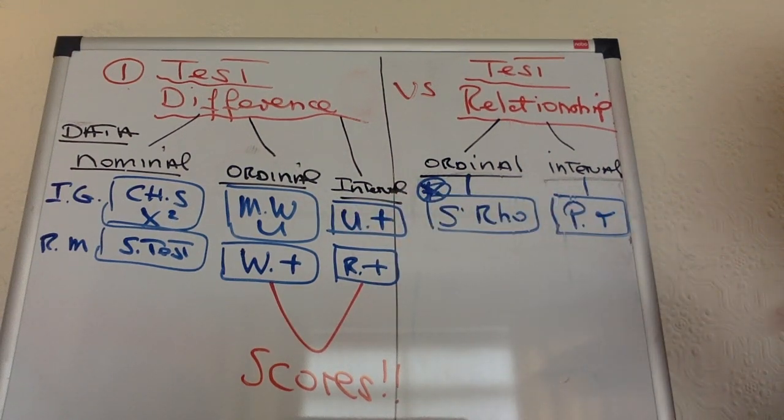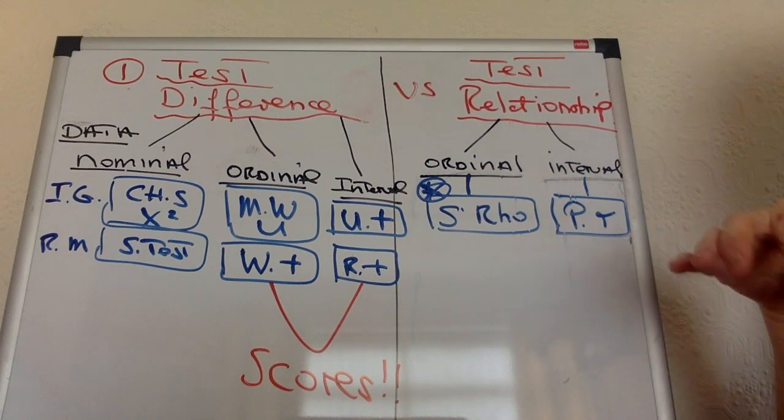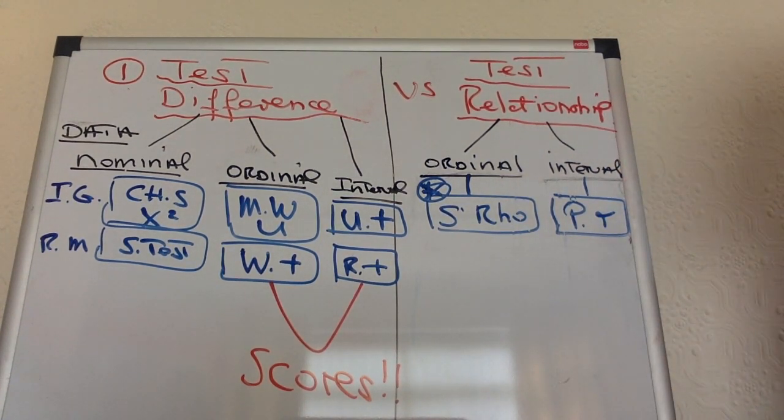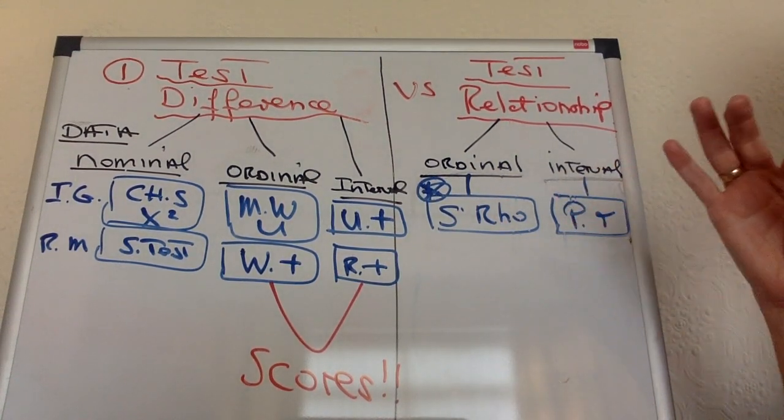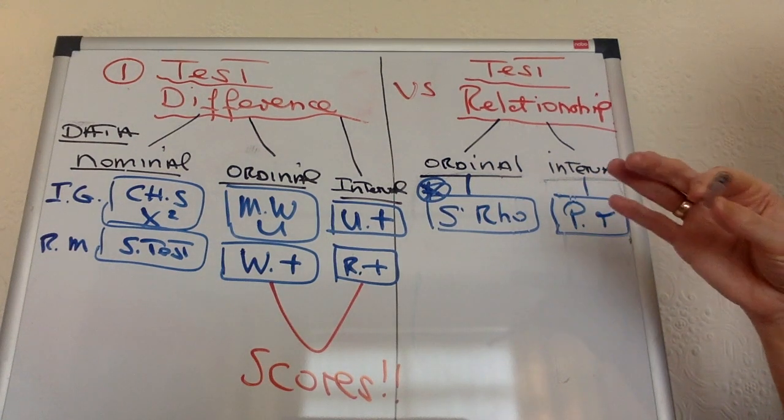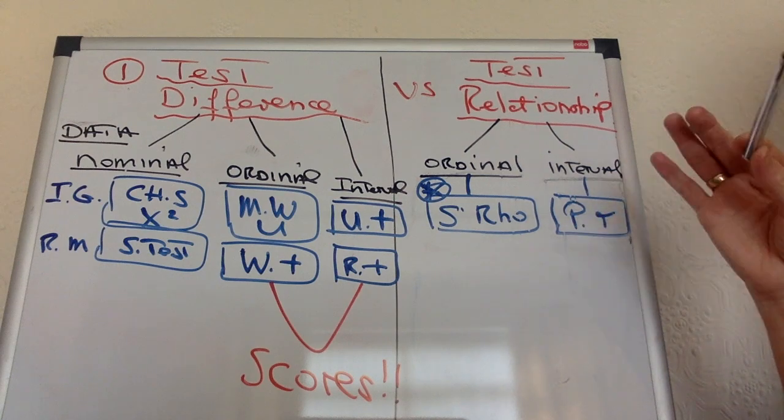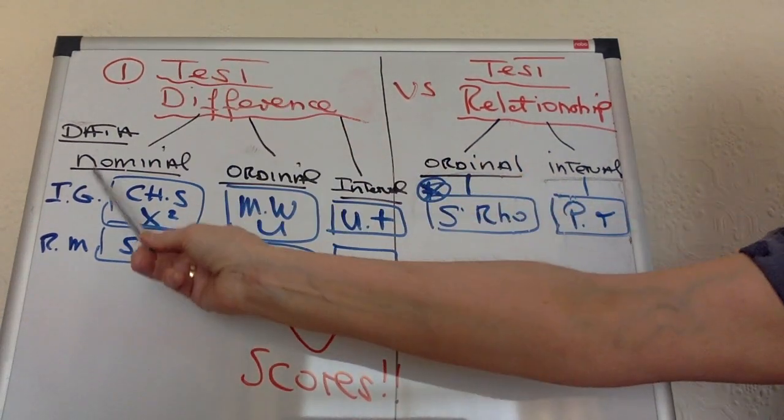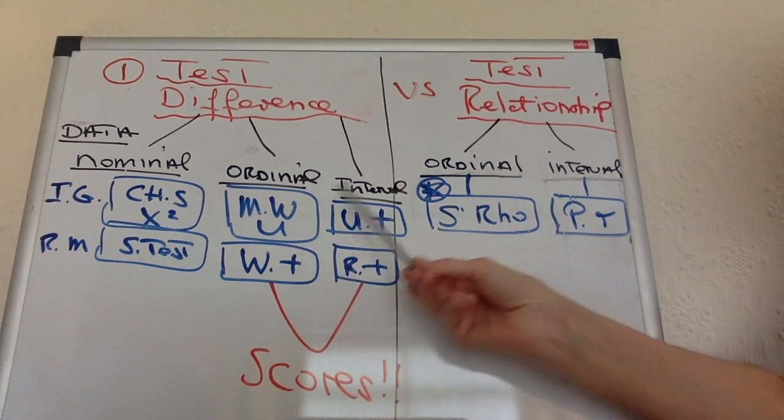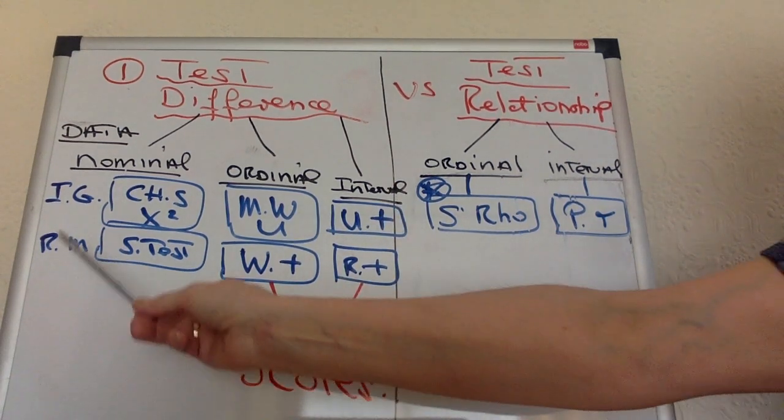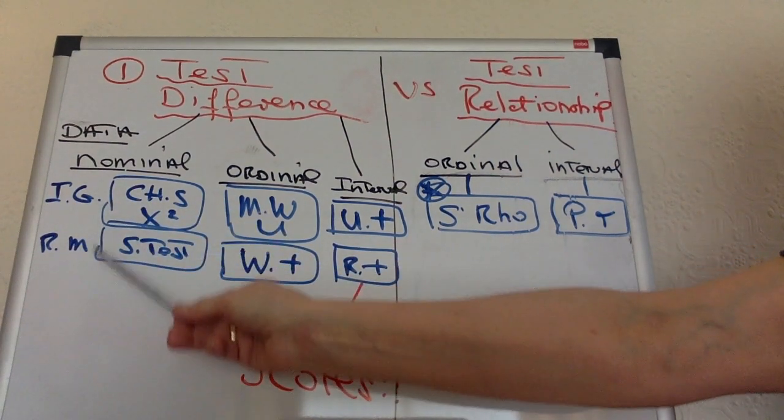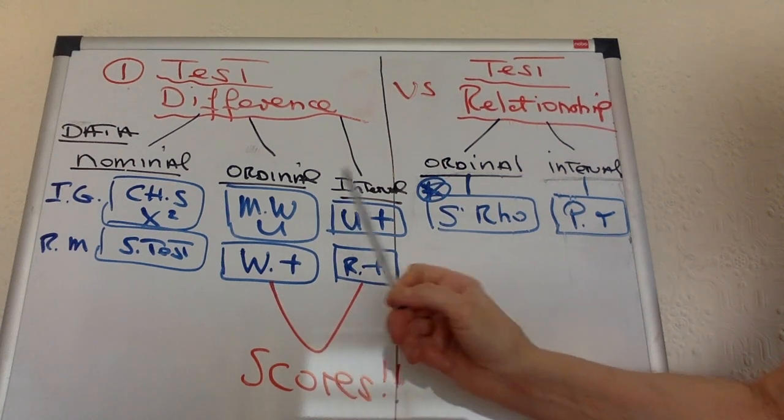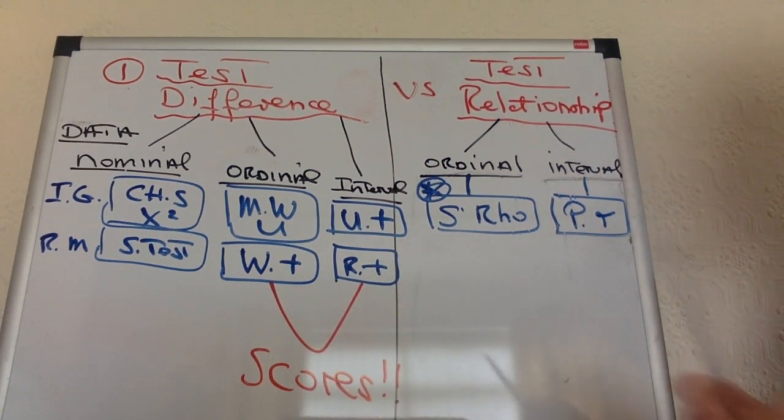So what is ordinal and what is interval? Ordinal data simply means you've got a list from first until last - from the very highest score until the lowest score, or from the first past the post to the last person past the post. Whereas interval data is always a very clear, standardized measurement - this could be like time, height, or weight. So you must know those. And then, once you know them, the same thing again: if you've got independent groups, then you've got ordinal data, Mann-Whitney. If you've got interval, unrelated t-test. If you've got repeated measures - the same people doing all the tests - then you've got Wilcoxon or related t-test.